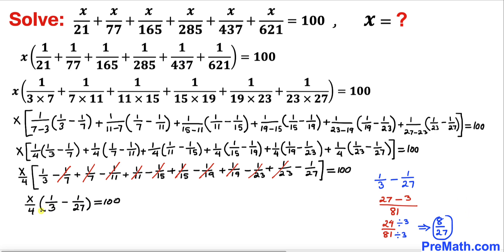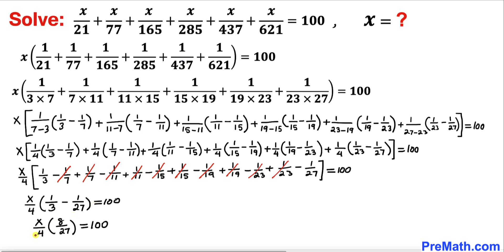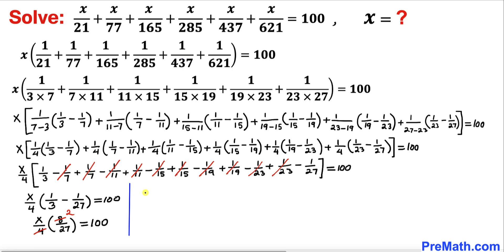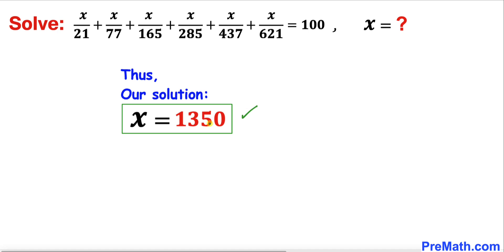Therefore we can write x/4 × 8/27 = 100. Since 4 goes into 8 twice, this simplifies to 2x/27 = 100. Multiplying both sides by 27/2 isolates x. The 27s cancel and the 2s cancel, giving us x = 100 × 27/2 = 1350. Our solution is x = 1350.